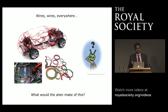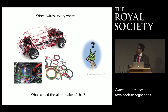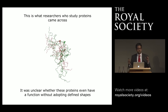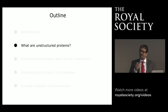Now I'd like to ask you to imagine another situation. The same alien removes all the well-structured and highly ordered components from the car, and what remains are a bunch of flexible wires that look highly similar. They can take specific shapes but don't have a precise, defined function. This is essentially what some scientists who study proteins came across: a group of proteins that don't adopt a defined three-dimensional structure. They are extremely flexible, can adopt different shapes, and for a long time it was unclear whether these disordered or unstructured proteins even have a specific function. This is what I'd like to discuss next—what exactly unstructured proteins are, why they matter, and what kinds of functions they can perform in a cell.